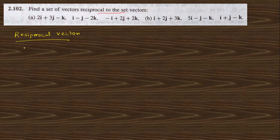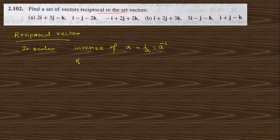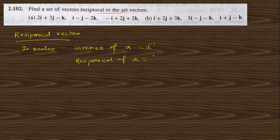In scalar quantity, the inverse of A can be written as 1/A, or A inverse. The reciprocal of A is 1/A. In scalar quantity, these two are equal — A inverse is nothing but 1/A, in the case of scalar quantity.